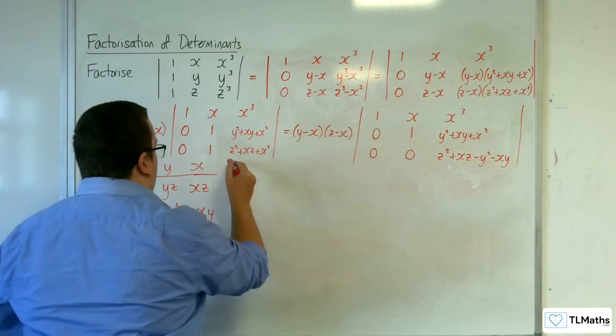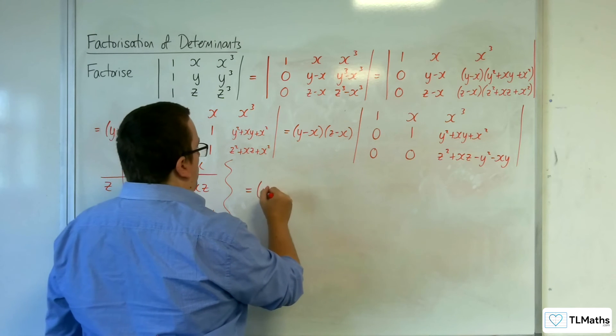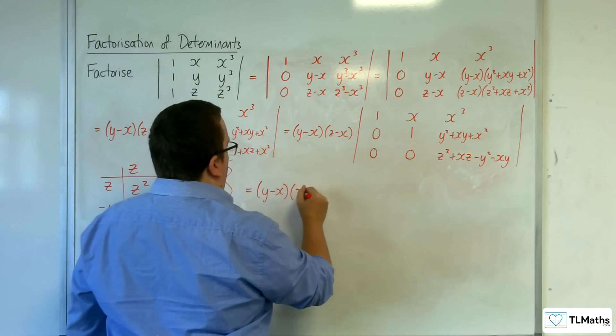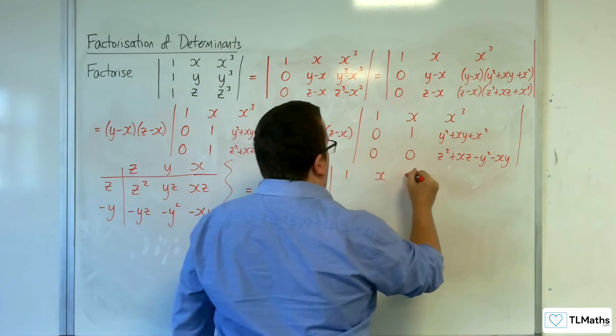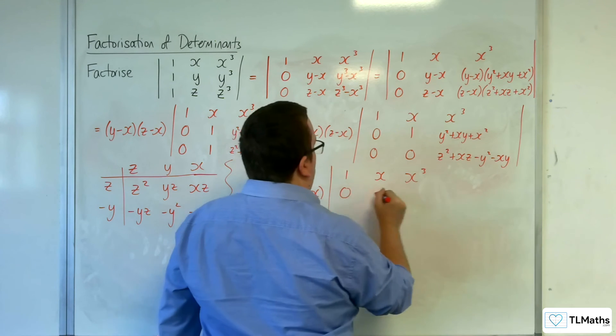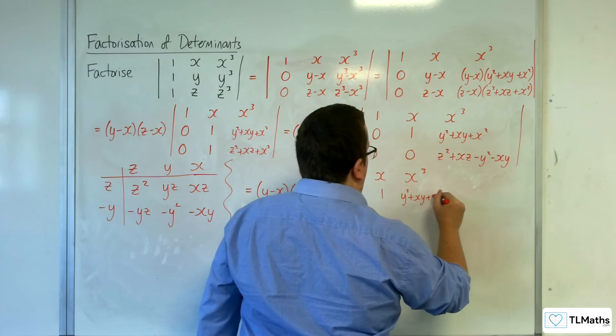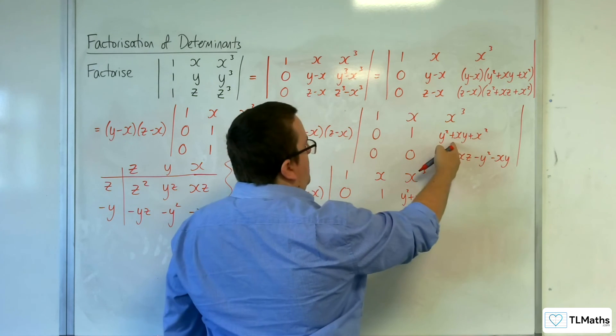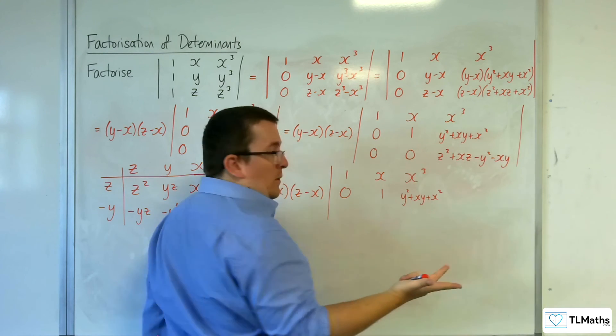Let's just put that there. So, I've now got y take away x, z take away x, 1, x, x cubed, 0, 1, then this y squared plus xy plus x squared. And the reason why I don't really need to worry about that anymore is because if I found the determinant of this, it would just be multiplying with 0 anyway. So, I don't need to worry about that.